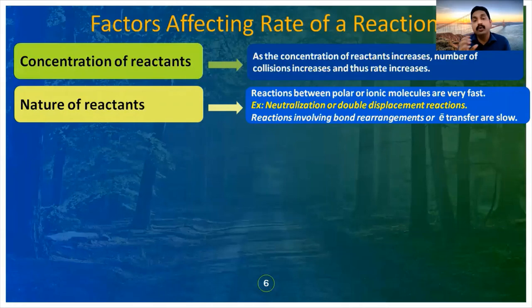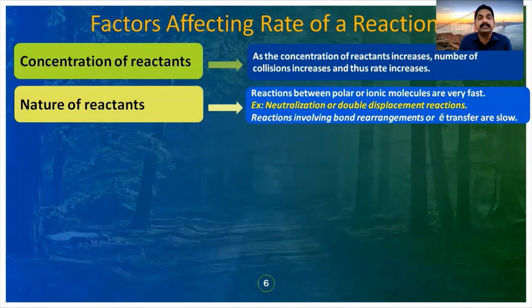Slow reactions include the rusting of iron, which is a very slow process. Bond rearrangement reactions and electron transfer reactions are also slow reactions. So the nature of the reactants determines whether the reaction is fast or slow.